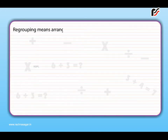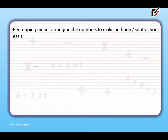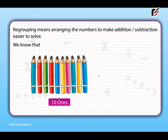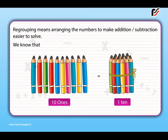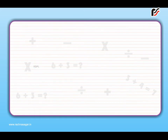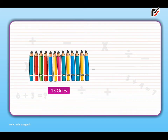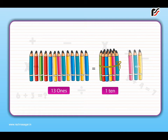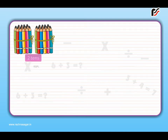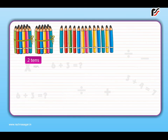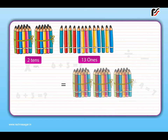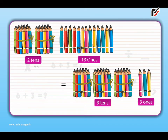Regrouping of numbers. Regrouping means arranging the numbers to make addition or subtraction easier to solve. We know that 10 ones is equal to 10. Similarly, 13 ones is equal to 1 ten and 3 ones. 23 ones is equal to 2 tens and 3 ones.